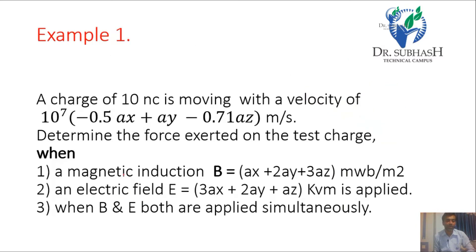We try to understand the Lorentz force through an example. We are given a charge of 10 nanocoulombs moving with velocity 10×10⁷ in the direction (−0.5 Ax + Ay − 0.71 Az) m/s. We determine the force exerted when the magnetic induction B is (Ax + 2Ay + 3Az) milliWeber per meter squared and electric field E is (3Ax + 2Ay + Az) kilovolt per meter.